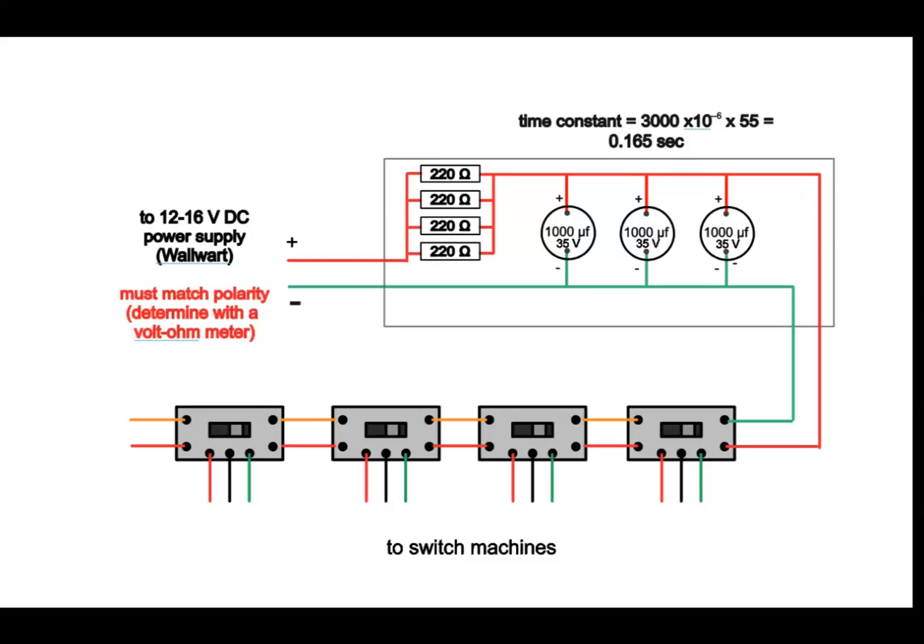So this is the final diagram for my capacitive discharge circuit. We start with a power supply of 12 to 16 volts DC. Make sure that you match the polarity of the power supply to that of the capacitors. That is, wire the positive lead from the power supply to the positive side of the capacitors and the negative to the negative. If you don't do that, it's possible to blow up your capacitors and destroy them. You can determine the polarity if it's not listed on the side of your wall wart with a volt-ohmmeter.